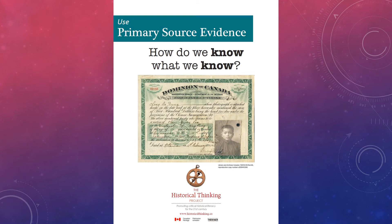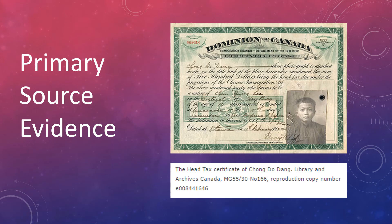Primary source evidence: how do we know what we know about history? Primary source evidence includes sources of information about the past such as letters, documents, diaries, newspaper stories, advertisements, commercials, etc. These things give us clues about what life was like in the past and help us understand the other historical thinking concepts — ethical dimensions of history, historical perspectives, cause and consequence, and how things are the same or different from the past.